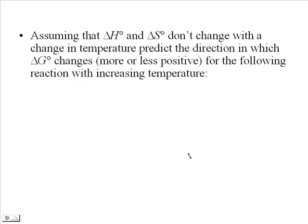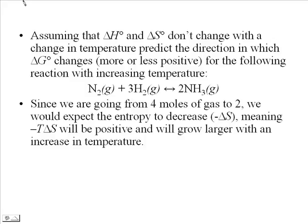We have to assume that delta H and delta S don't change much with temperature. For the ammonia synthesis reaction — nitrogen plus hydrogen producing ammonia — we should be able to look up values in the back of the book to determine whether it is spontaneous in the forward direction. We can predict qualitatively: going from 4 moles of gas on the left to 2 moles of gas on the right means the system becomes more ordered, so we expect a negative delta S.